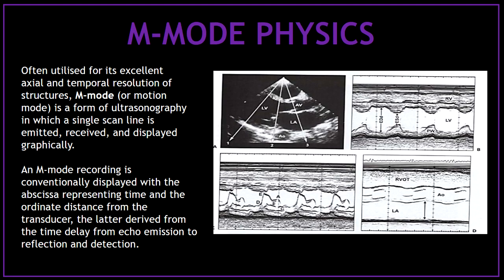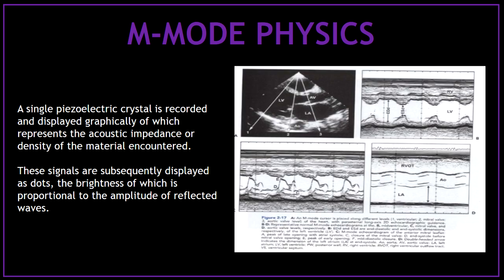Now let's talk about the M-mode physics. Often utilized for its excellent axial and temporal resolution of structures, M-mode is a form of ultrasonography in which a single scan line is emitted, received, and displayed graphically. An M-mode recording is conventionally displayed with the abscissa representing time and the ordinate representing distance from the transducer, the latter derived from the time delay from echo emission to reflection and detection. These signals are displayed as dots, the brightness of which is proportional to the amplitude of the reflected waves.